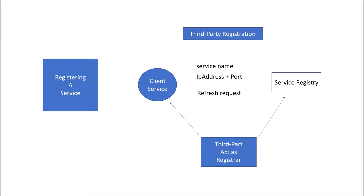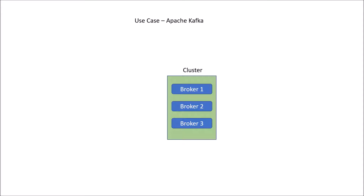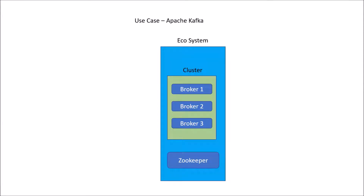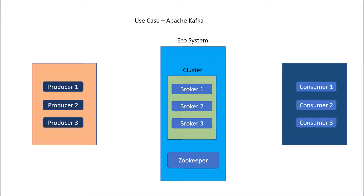Let's look at a simple use case of Apache Kafka and how service discovery of brokers is done. In Kafka, servers are called brokers. Let's say we have broker 1, broker 2, and broker 3 — a group of brokers is called a cluster in Kafka. Kafka uses ZooKeeper as a service registry for these brokers, and the cluster together with ZooKeeper forms the Kafka ecosystem. Since this is a messaging system, we have producers and consumers. Producers push messages to the brokers, and consumers pull messages from the brokers. The question is: how does a producer know which broker to push the message to?